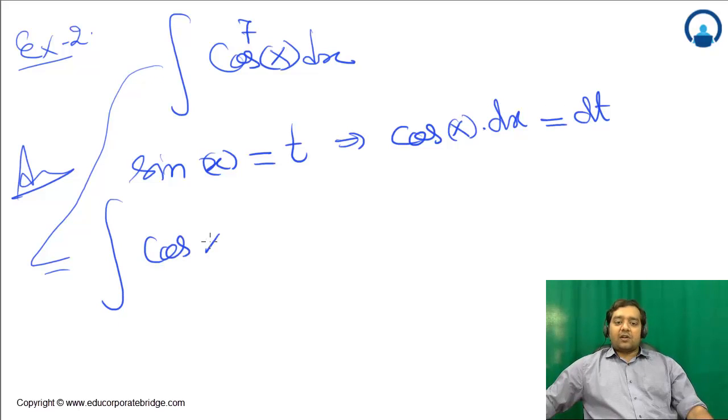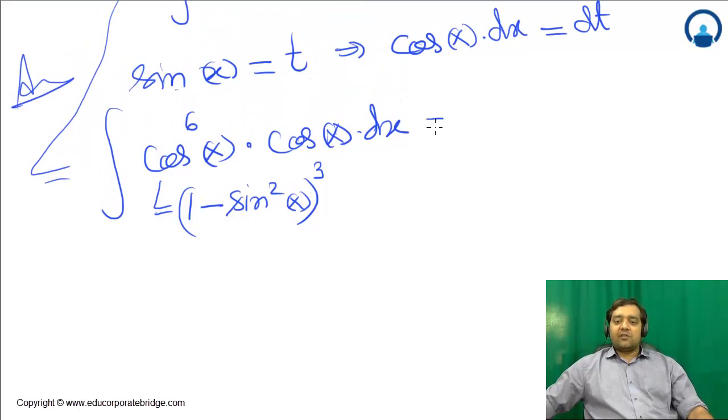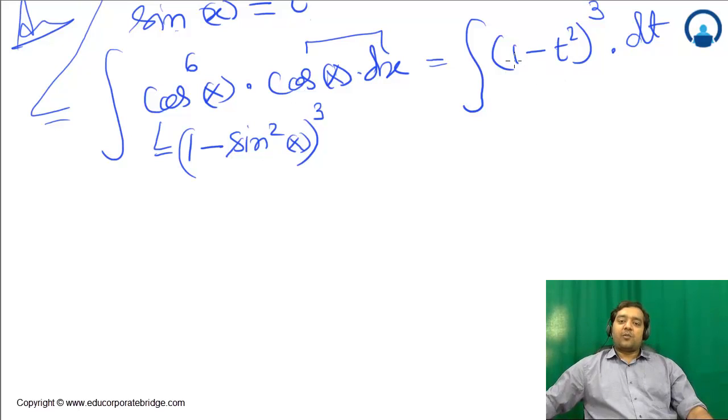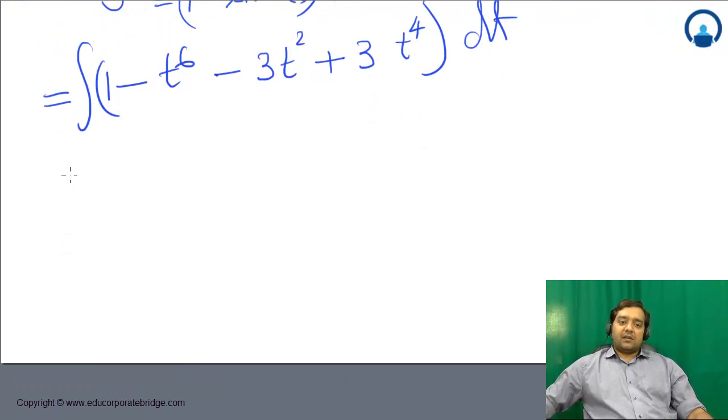sin(x) = t implies cos(x)dx = dt. This equals the integration of cos⁶(x) · cos(x)dx. cos⁶(x) = (1 - sin²(x))³. Using the binomial expansion (1 - t²)³, this opens to 1 - 3t² + 3t⁴ - t⁶.